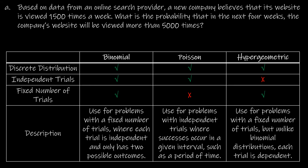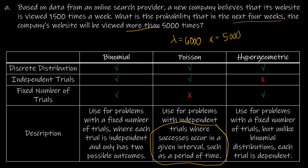For the first question: based on data from an online search provider, a new company believes that the website is viewed 1,500 times per week. What is the probability that in the next four weeks, the company's website will be viewed more than 5,000 times? Here we're looking for successes occurring in a given interval — this is where we find lambda, the average in a given period of time. The website is viewed 1,500 times per week over four weeks, so lambda would be 6,000. This is a Poisson distribution with lambda = 6,000 and X = 5,000, and we're looking at more than 5,000 times, so it would be cumulative.